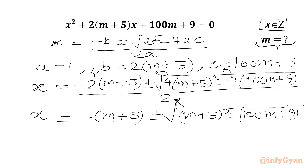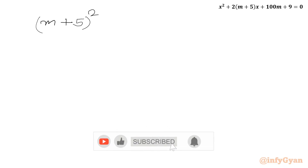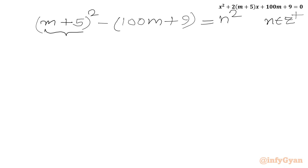Now x should be integer, so for x to be integer this radicand must be a perfect square. Let us say it equals n². So (m+5)² - (100m + 9) = n², where n is a positive integer. Now we apply the (a+b)² formula: m² + 10m + 25.